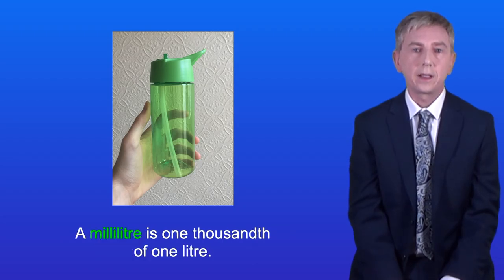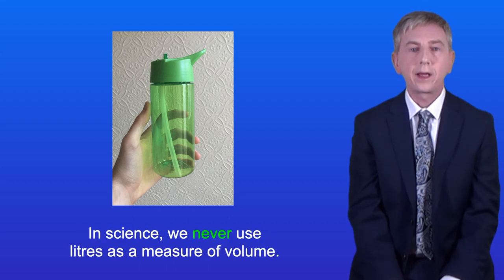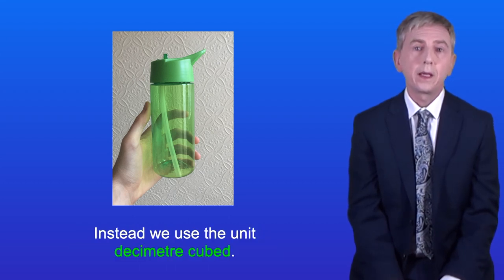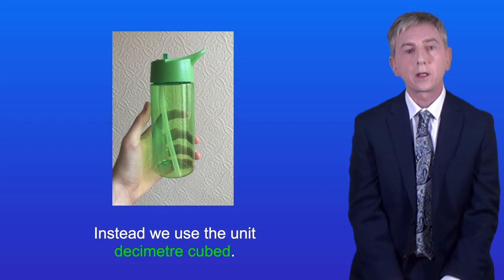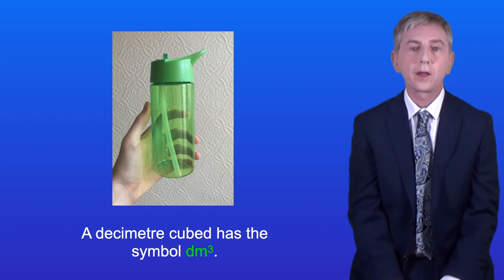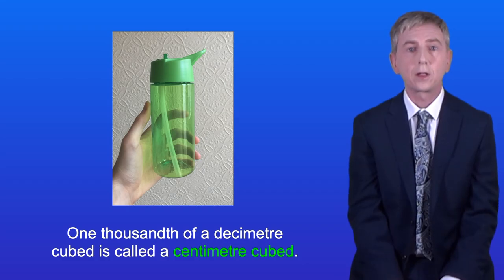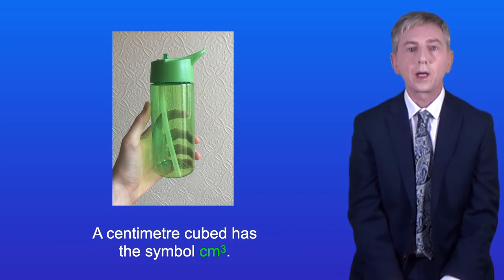A millilitre is one thousandth of one litre. In science we never use litres as a measure of volume. Instead, we use the unit decimetre cubed, also called a cubic decimetre. A decimetre cubed has the symbol dm³. One thousandth of a decimetre cubed is called a centimetre cubed, which has the symbol cm³.